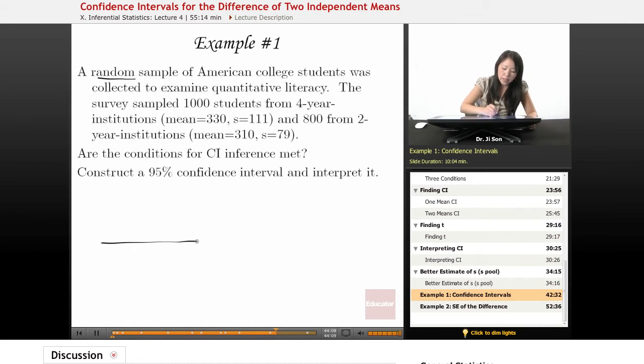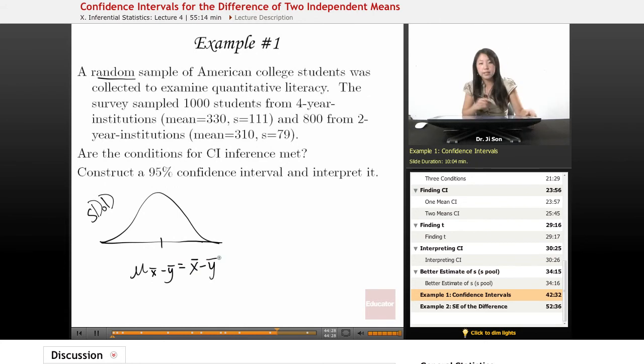Well, it helps to start off with a drawing of my distribution, just to anchor my thinking. And this mu sub x-bar minus y-bar. We could assume that this is x-bar minus y-bar, because that's what we do when we do confidence intervals. We use what we have from the samples to figure out what the population might be.